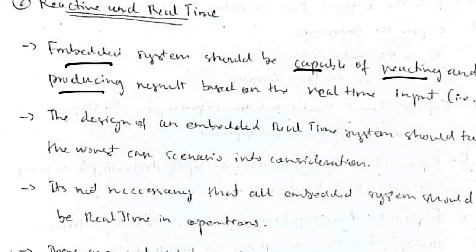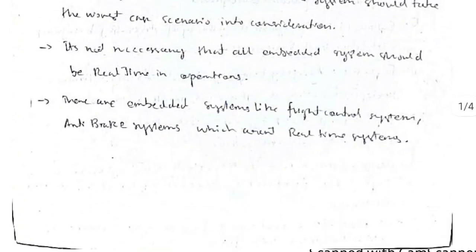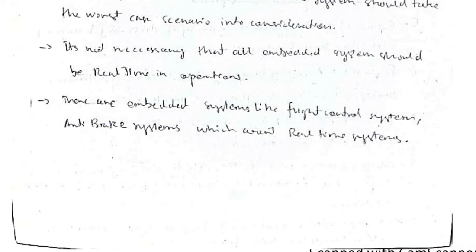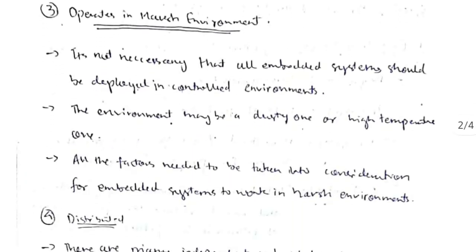The second characteristic is reactive and real-time. This means the embedded system should be capable of reacting and producing results based on real-time inputs — live events and so on. However, it's not necessary that all embedded systems are real-time; for example, the flight control system and anti-brake systems are not real-time.